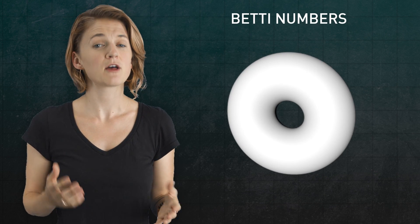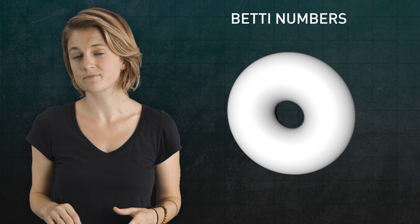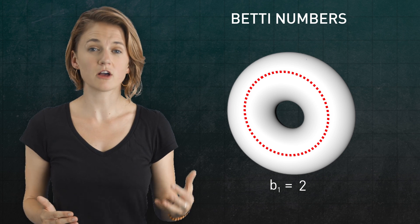Here's a torus. The first Betty number counts the number of one-dimensional or circular holes. So, there's two. One along the longitude and one along the meridian.